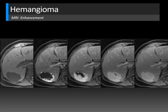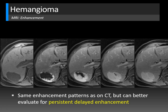The enhancement patterns of hemangioma on MRI are the same as on CT, but can usually be better evaluated because of more post-contrast sequences with later delays. On non-contrast T1 fat-suppressed imaging the hemangioma is bright, then starts to fill in on the hepatic arterial phase, continues filling on the portal venous phase, and on delayed equilibrium phases shows homogeneous delayed enhancement — classic and highly specific for hemangioma.